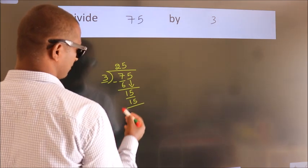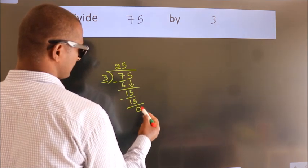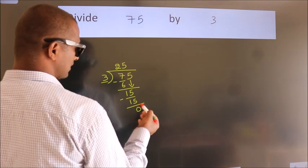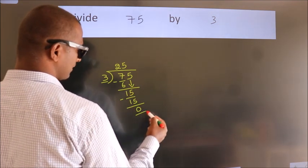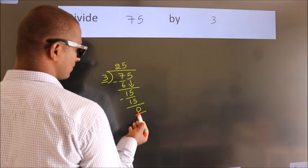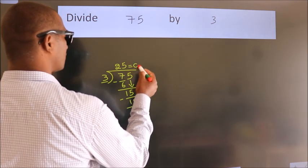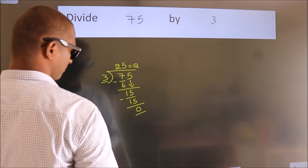Now, we should subtract, we get 0. After this, no more numbers to bring it down. And, we got remainder 0. So, this is our quotient.